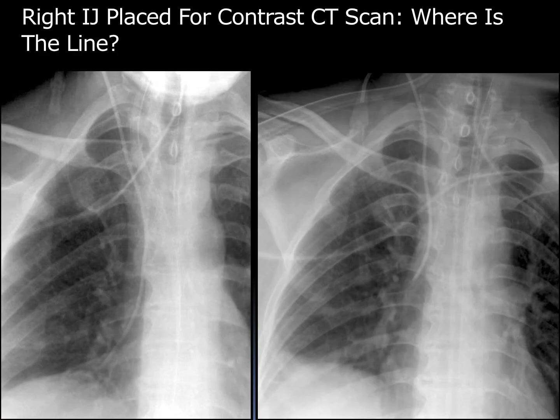This patient received a right internal jugular catheter for contrast administration for a CT scan. On the initial radiograph to your left, the catheter was thought to be a little deep. But the catheter also flared outward, which was noted but no comments were made. The recommendation was to retract the catheter ever so slightly and to repeat the radiograph.